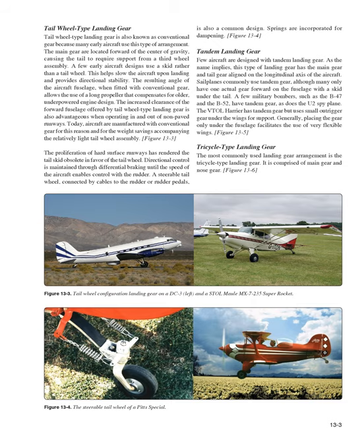The increased clearance of the forward fuselage offered by tail-wheel-type landing gear is also advantageous when operating in and out of non-paved runways. Today, aircraft are manufactured with conventional gear for this reason and for the weight savings accompanying the relatively light tail-wheel assembly. The proliferation of hard surface runways has rendered the tail skid obsolete in favor of the tail wheel. Directional control is maintained through differential braking until the speed of the aircraft enables rudder control. A steerable tail wheel, connected by cables to the rudder or rudder pedals, is also a common design. Springs are incorporated for dampening.